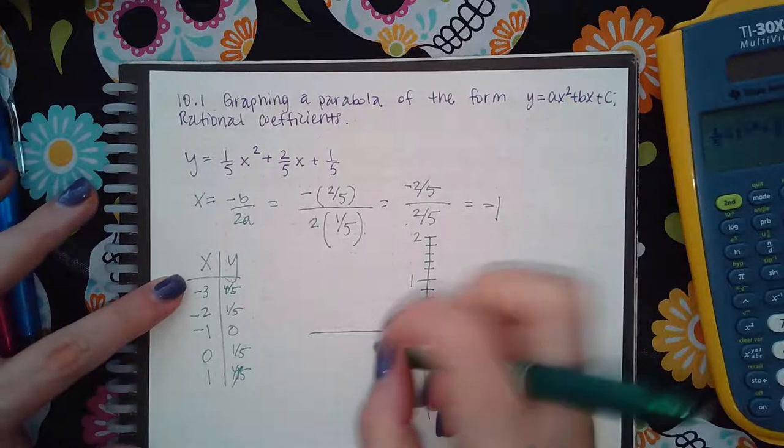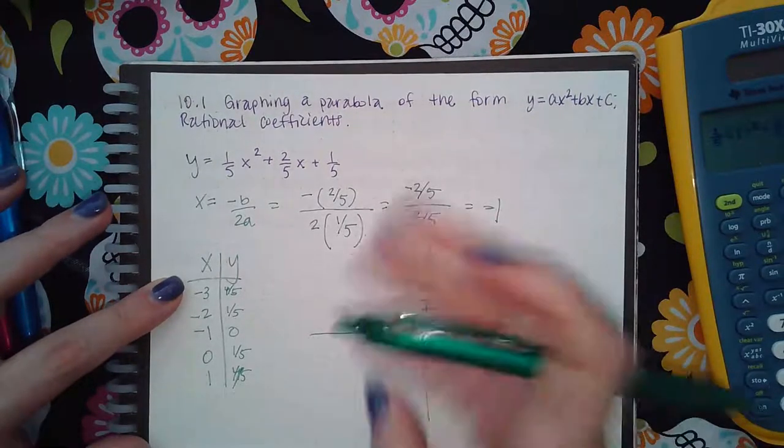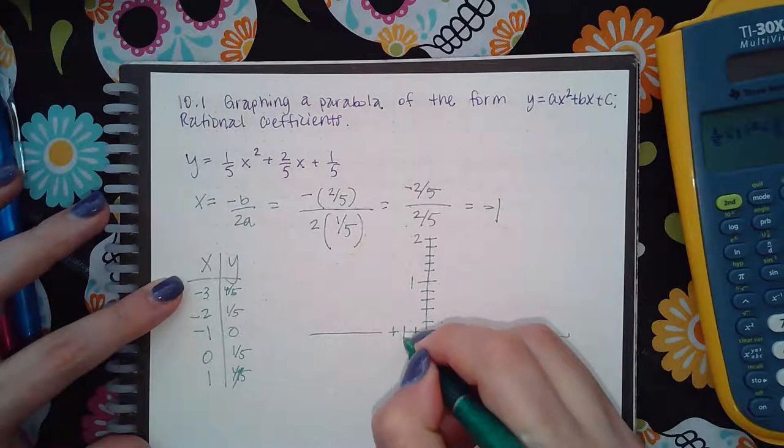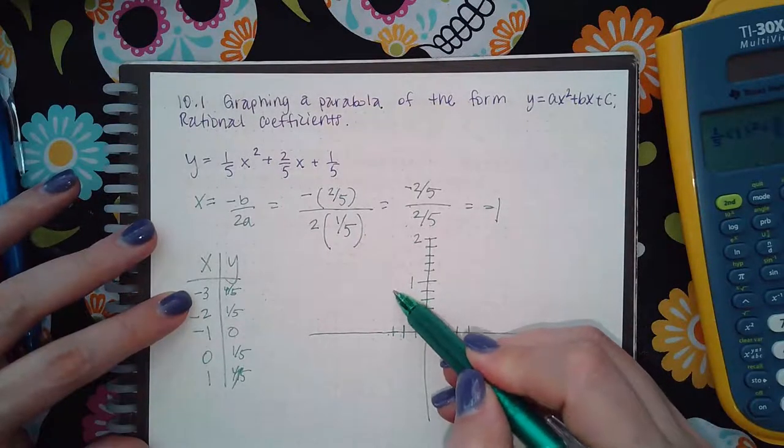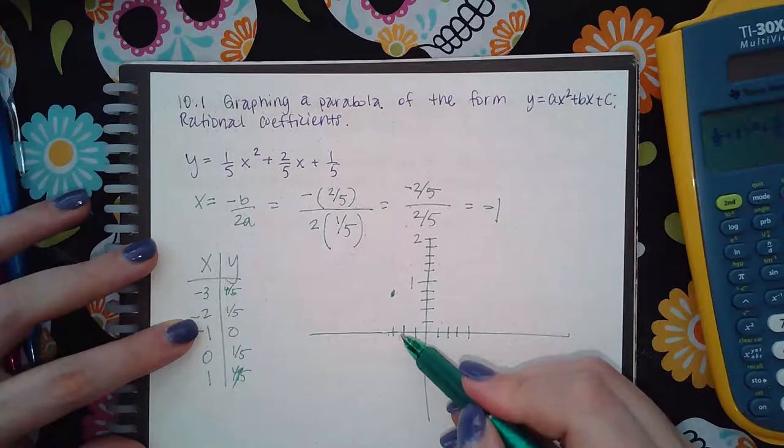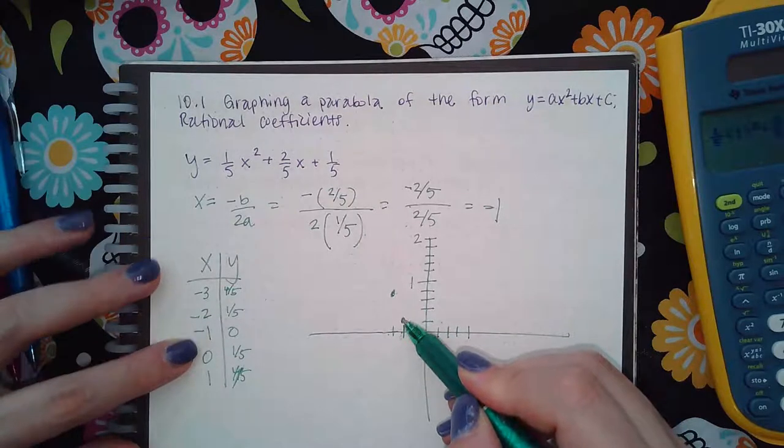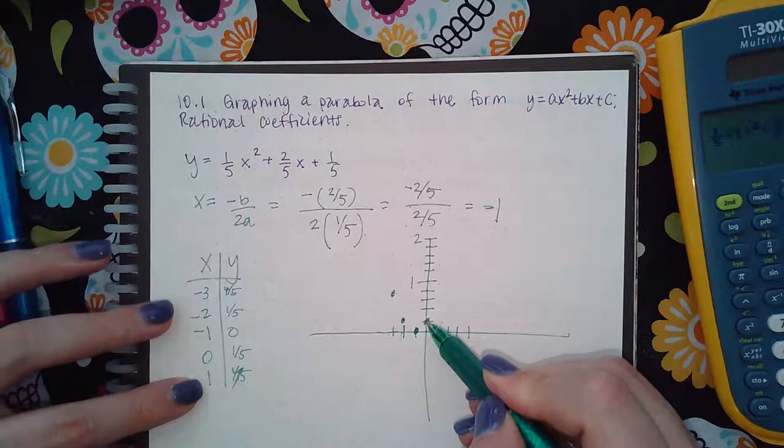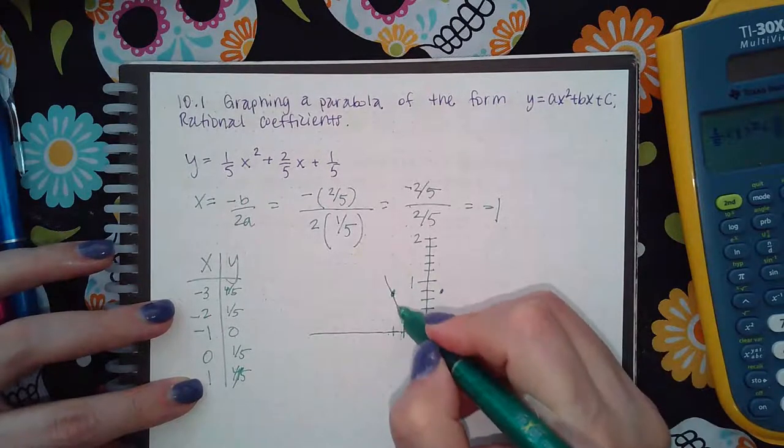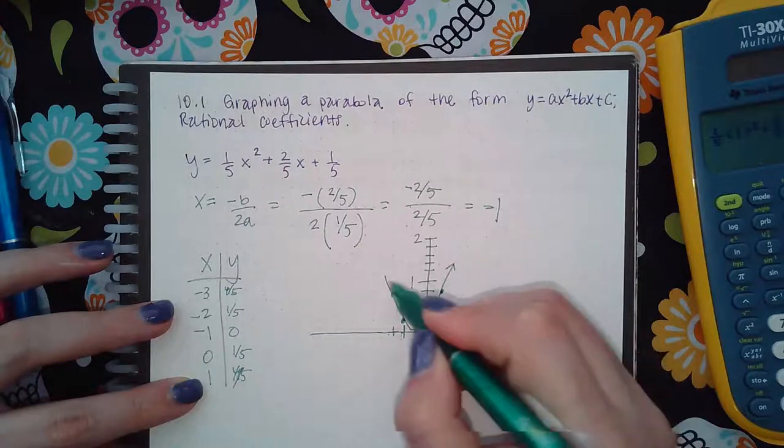Negative 3 and 4 fifths is here. Negative 2 and 1 fifth is there. Negative 1 and 0. 0 and 1 fifth. And then 1 and 4 fifths. So you get an image that looks like this.